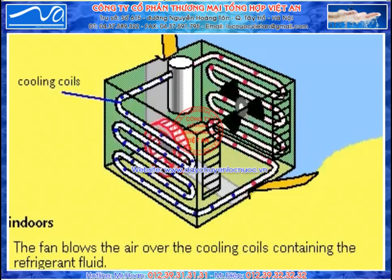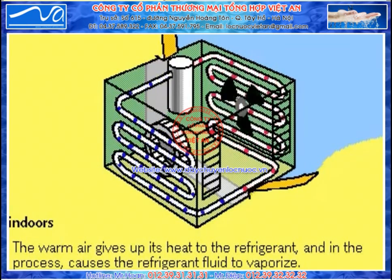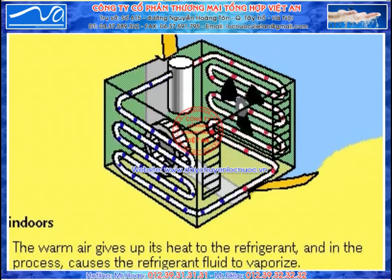As the room air flows by the coils, it causes the liquid in the coils to evaporate, and in the process, heat is absorbed by the refrigerant as it turns to gas. The cooled air is blown back into the room.